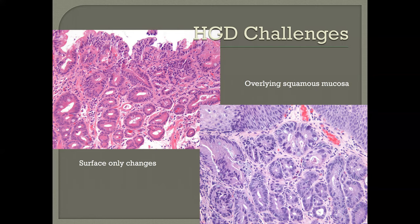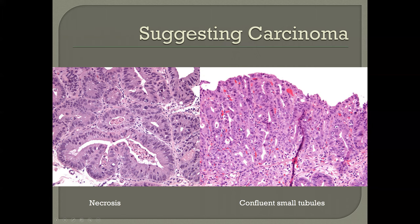Areas where we begin to suggest carcinoma: when we see confluent small tubular glands, back-to-back-to-back, where you can't draw where the gland stops and the lamina propria begins — that would begin to be called intramucosal carcinoma. Similarly, if we begin to see necrotic debris, that's an ominous sign, not something usually associated with just high-grade dysplasia. Be aware of those subtle clues to help differentiation.